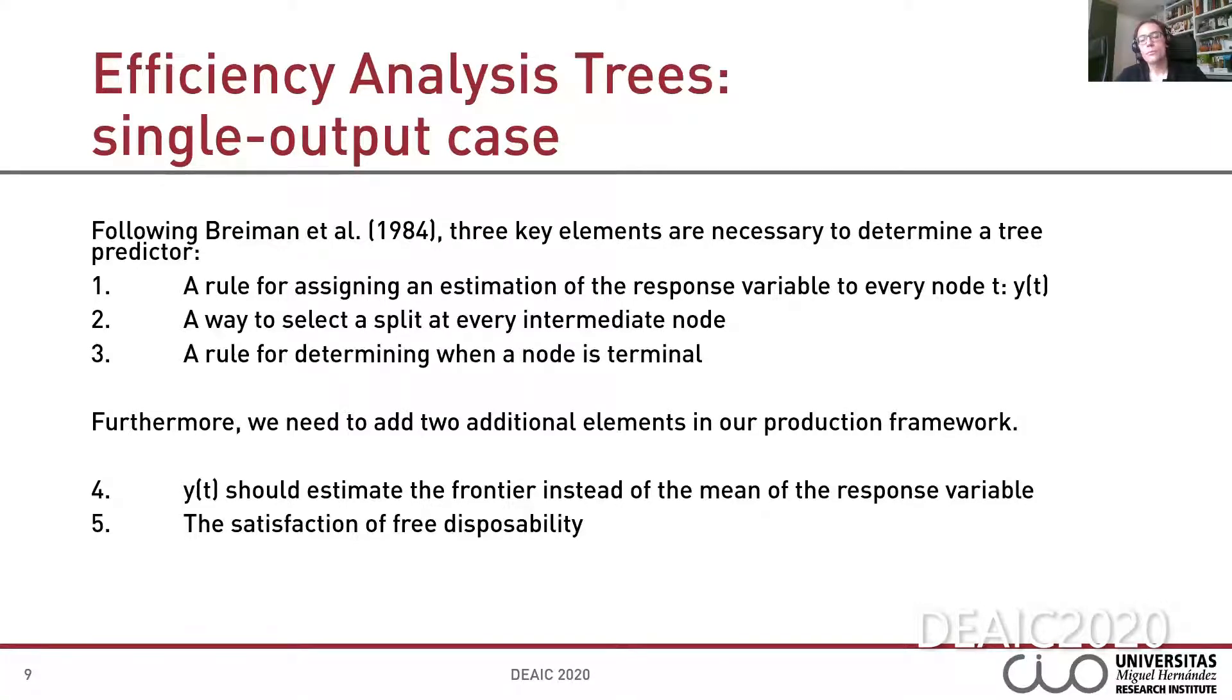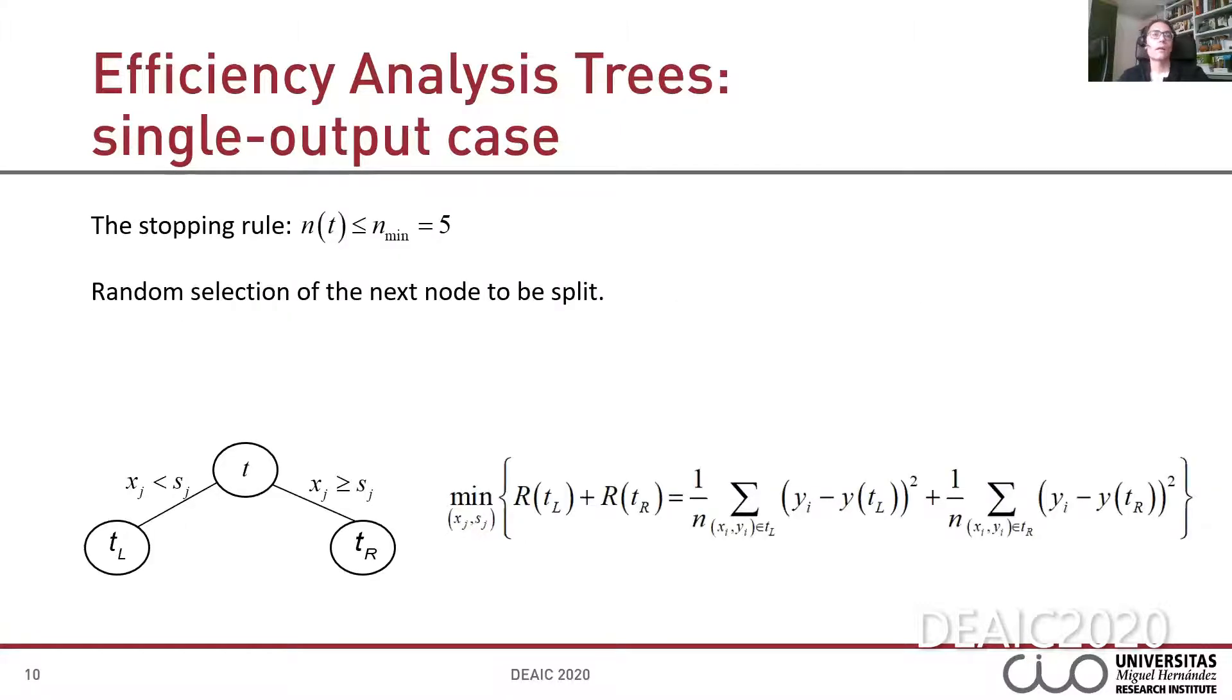What's more? We need to add two additional elements in our production framework. yt should estimate the frontier instead of the mean of the response variable. And finally, satisfaction of free disposability. This point is probably the most difficult part to be addressed. And we deal with it in this paper by proposing a way of adapting the estimation of the output in each node. Well, in our approach, a node is terminal when it satisfies a certain stopping rule. Following Breiman, the number of observations in a node t is less than or equal to 5, then such node must be terminal. In fact, it's terminal in our case.